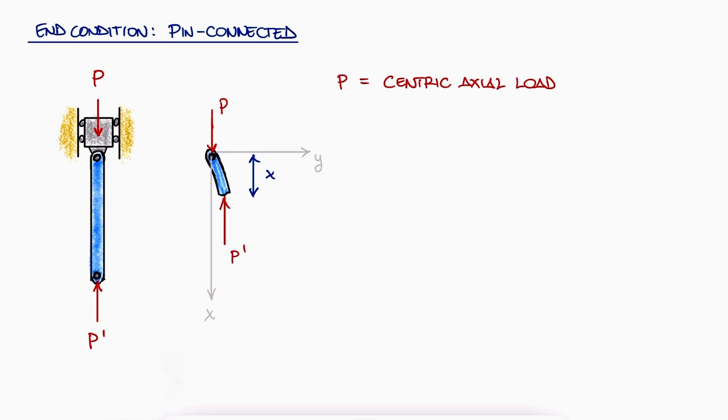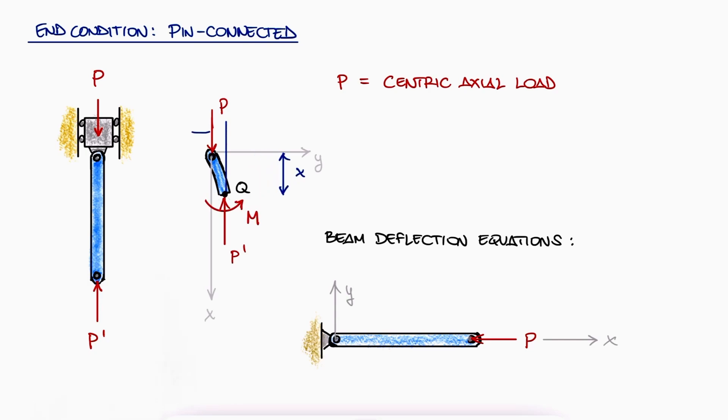Notice that I'm using x as the vertical axis and y as the horizontal axis because we're used to the beam deflection equations that we'll use in a minute, and a column is nothing more than a beam subjected to a horizontal compressive load. A free body diagram of the cut would show a reaction load P' and a reaction moment M at Q where the reaction moment would be minus P times y.